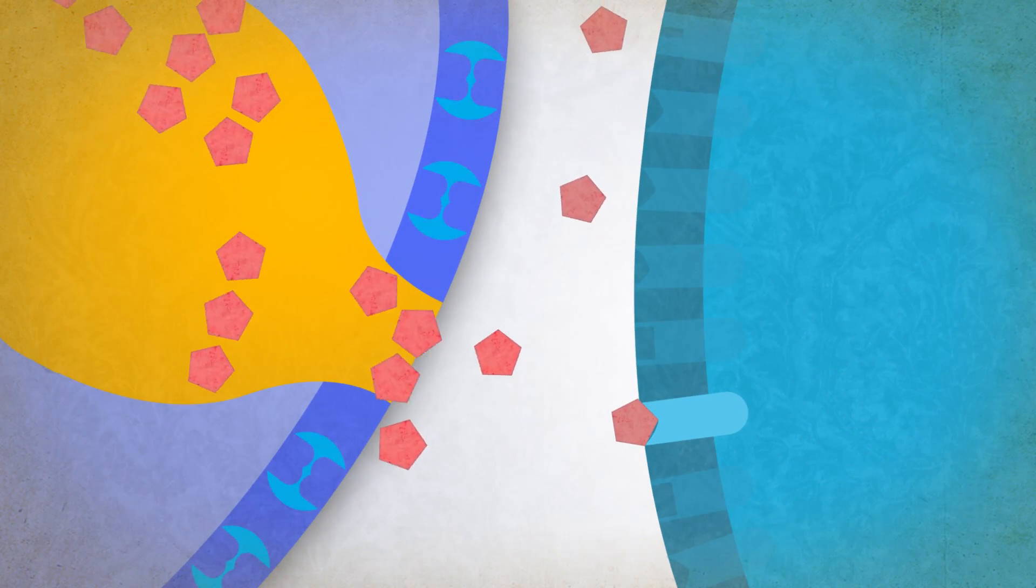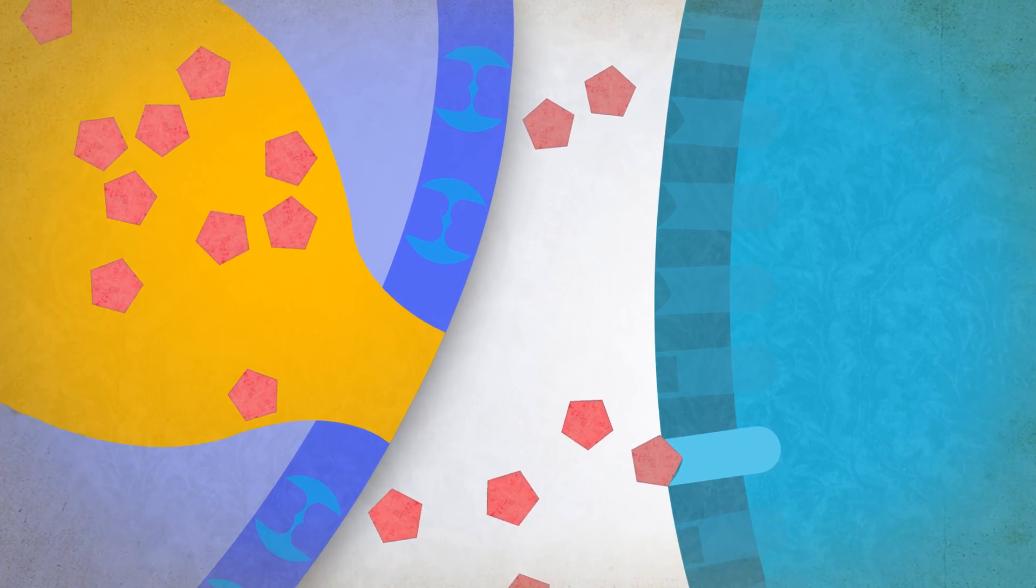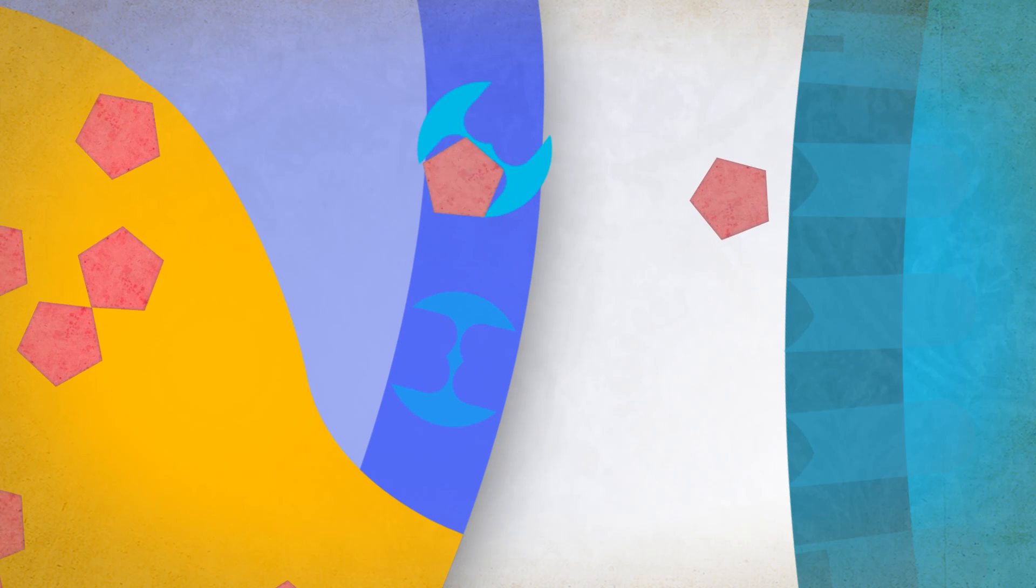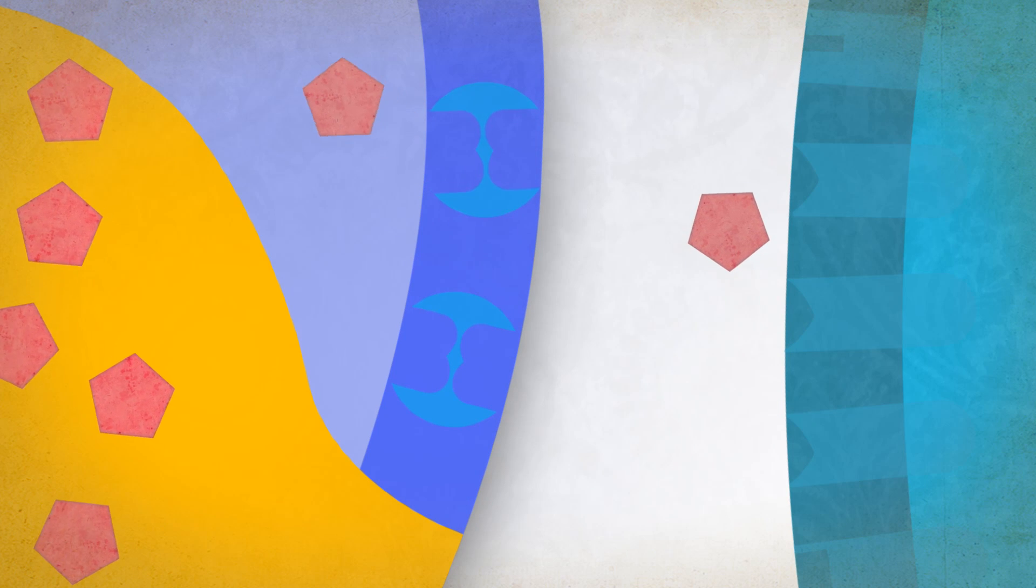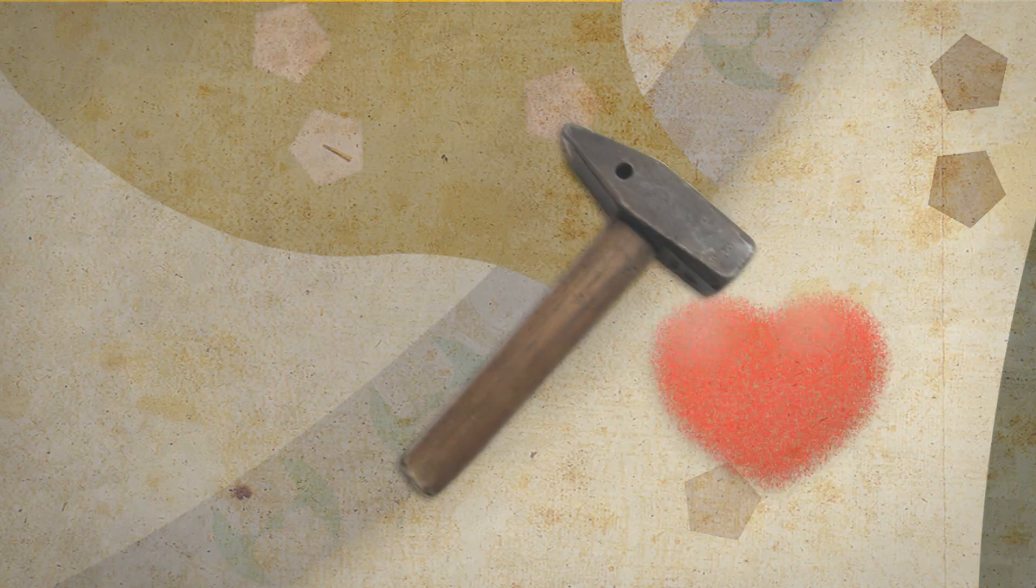Serotonin can also bind to reuptake transporters. Reuptake transporters work as a revolving door. After the serotonin enters, the transporter spins around and pushes the serotonin back into the axon terminal. Some serotonin makes its way back into the vesicles, but some of it gets broken down by an enzyme called monoamine oxidase.